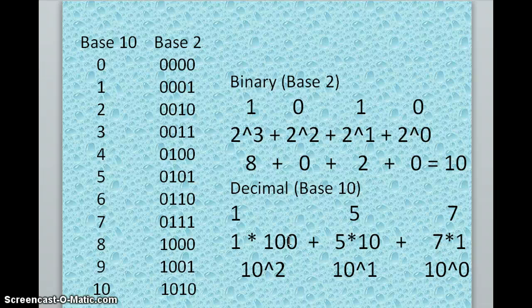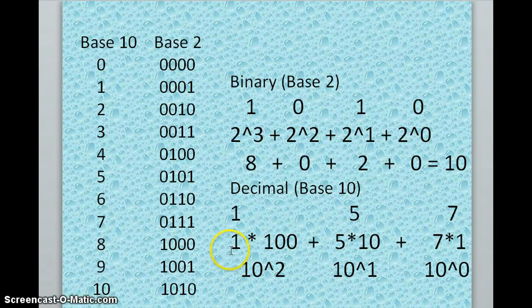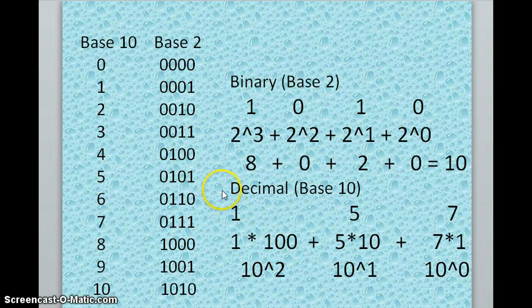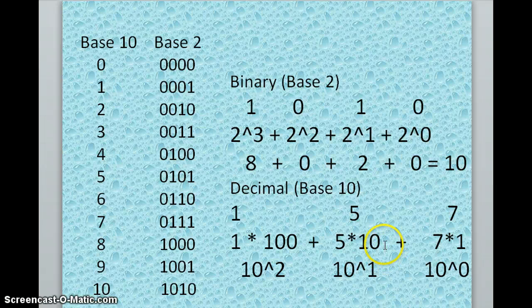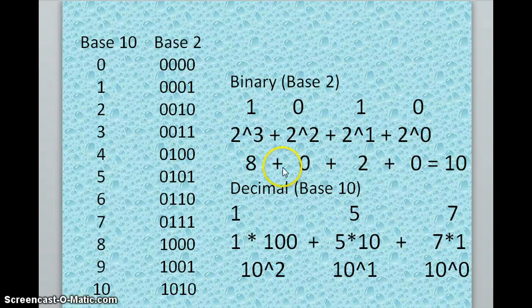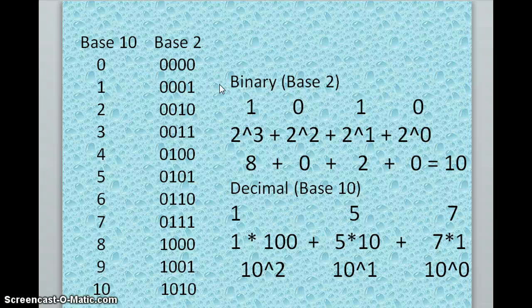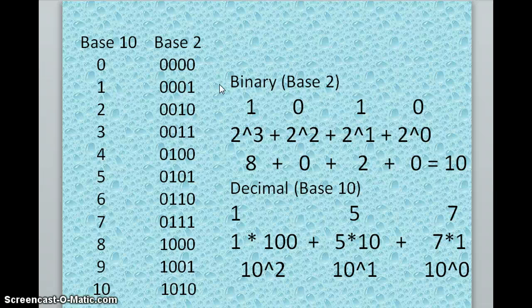So we'll say the value here is 1 times whatever that product you got from multiplying the number or the base times that power. In this case, we have 100 plus 50 plus 7, making 157. So pretty obvious, but that is how the decimal system works. Now, if we look at the binary system, we can see that it's a little bit more complex but also in other ways more simple.